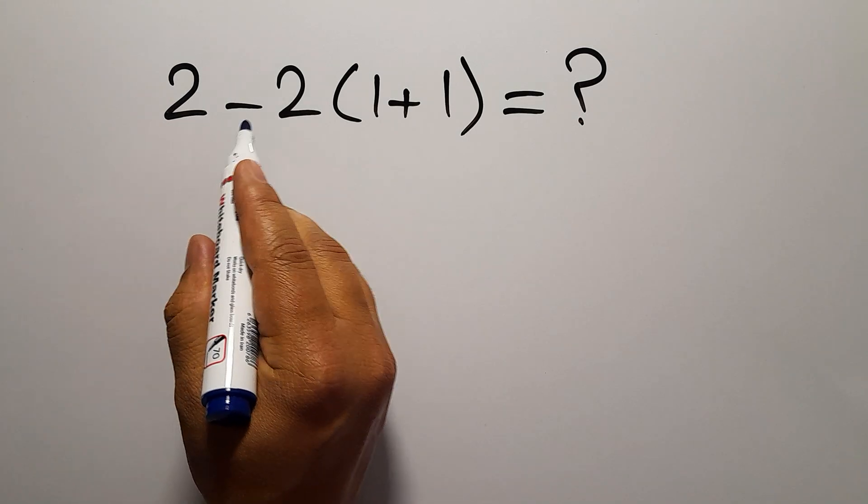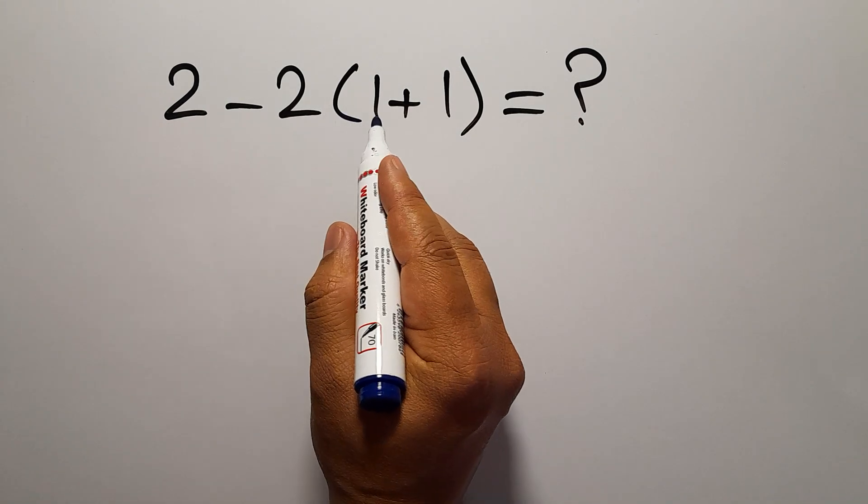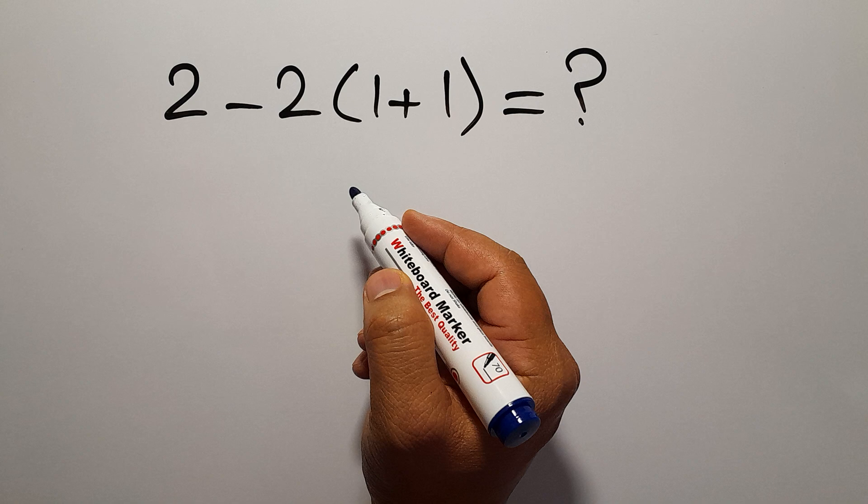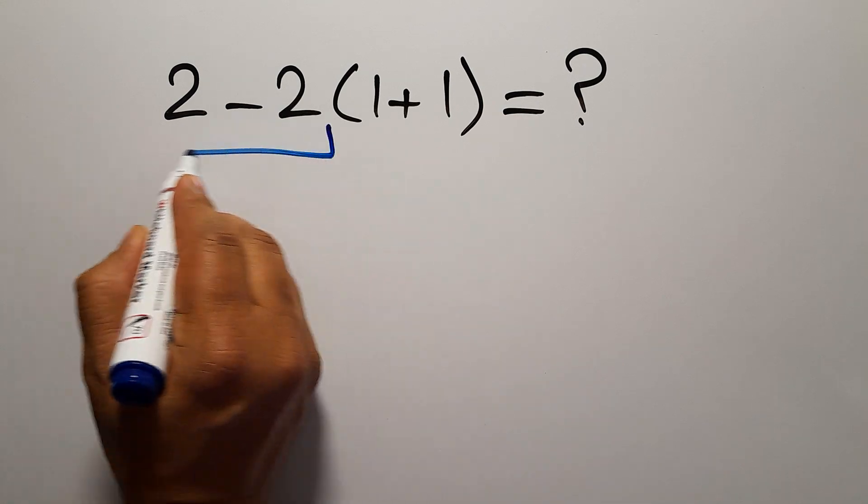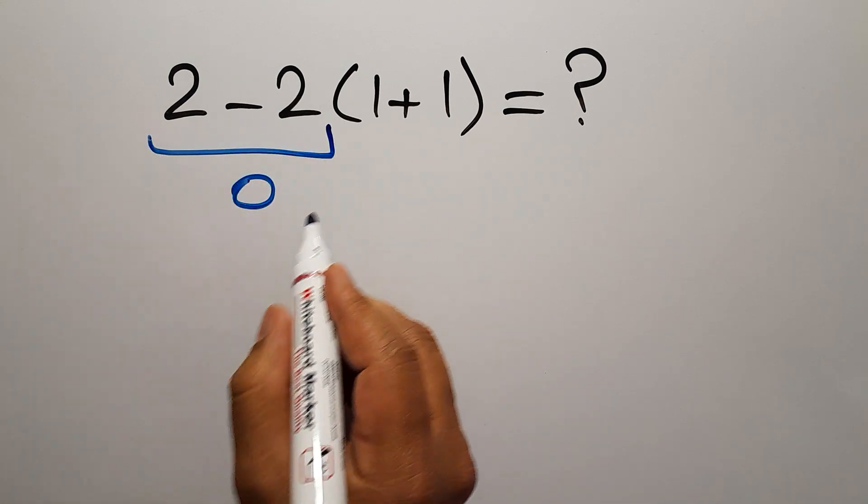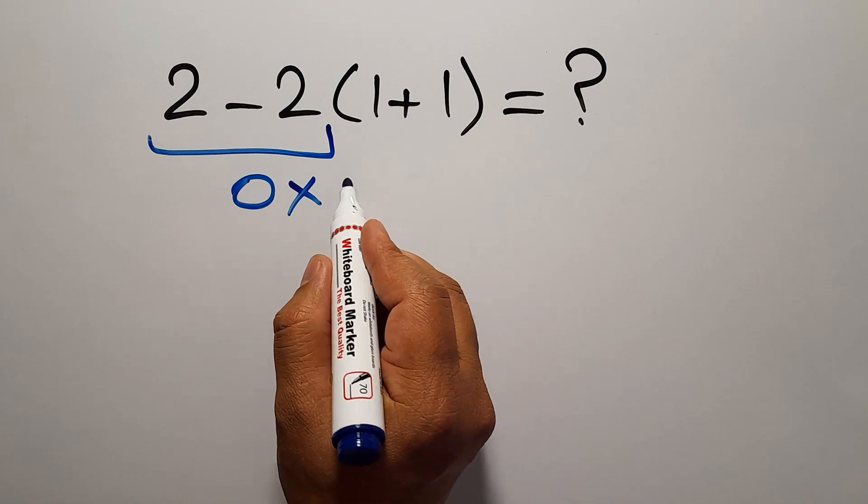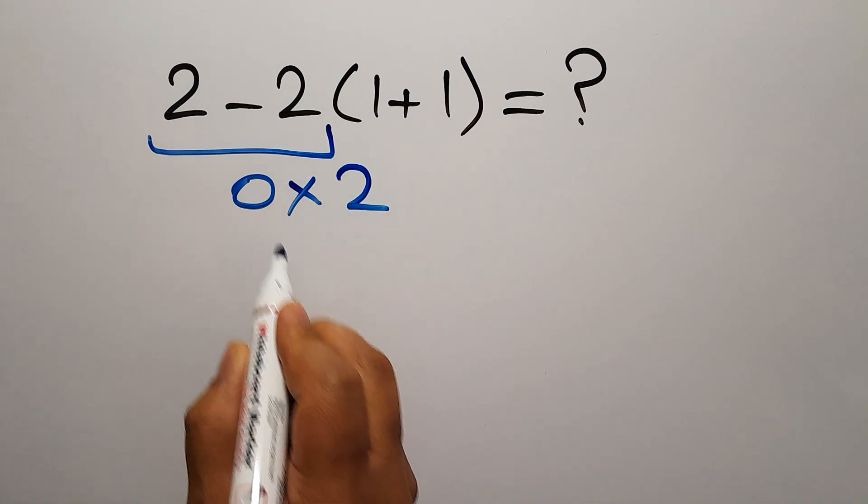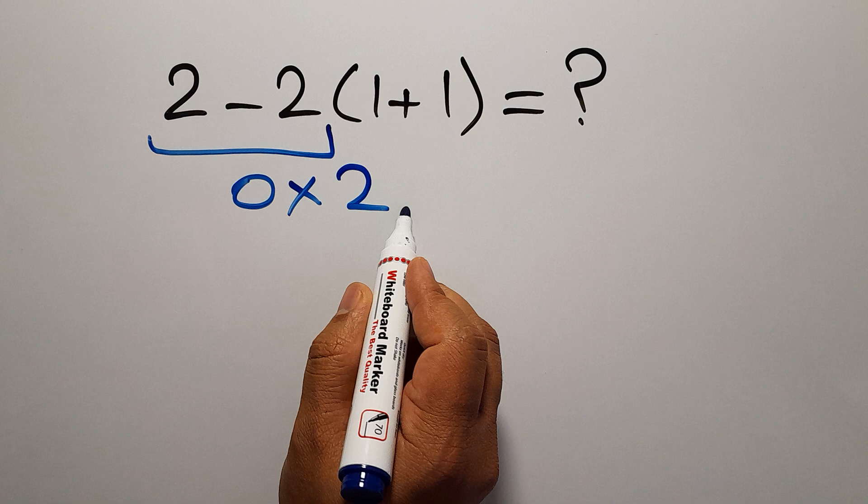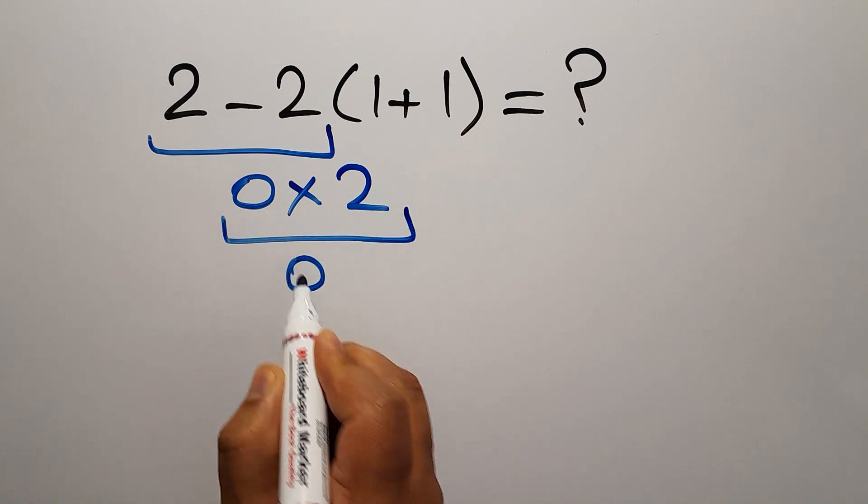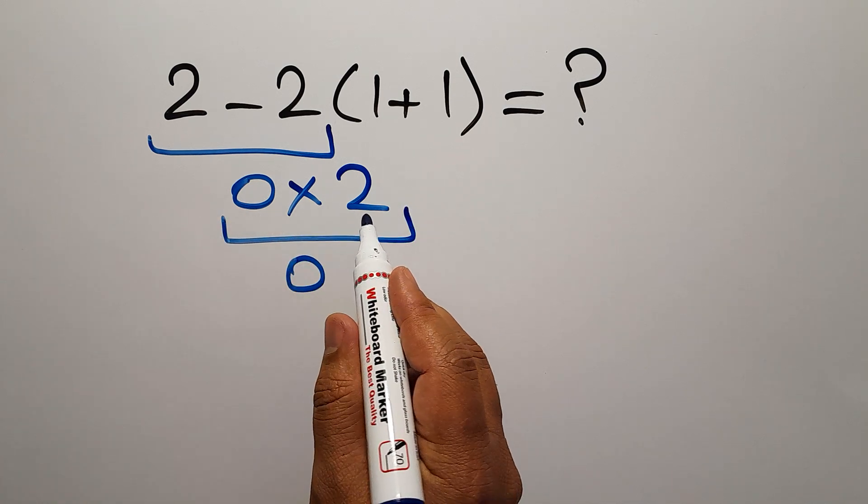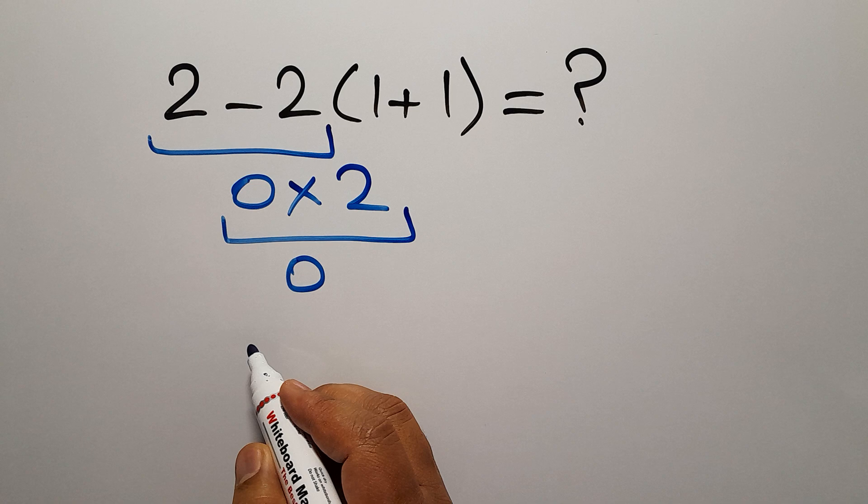2 minus 2 times 1 plus 1. 2 minus 2 gives us 0. So 0 times 1 plus 1 equals 2. 0 times 2 equals 0 because 0 times any number equals 0.